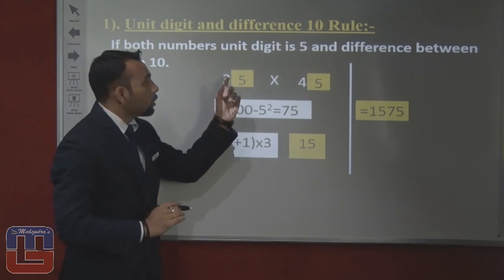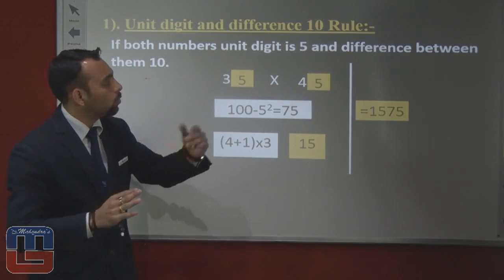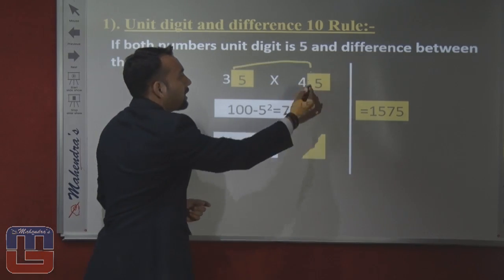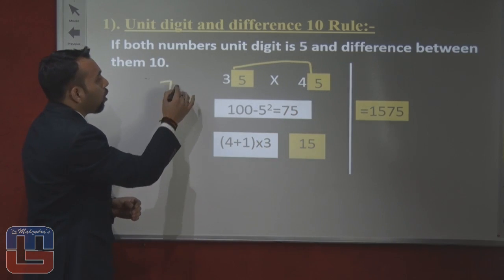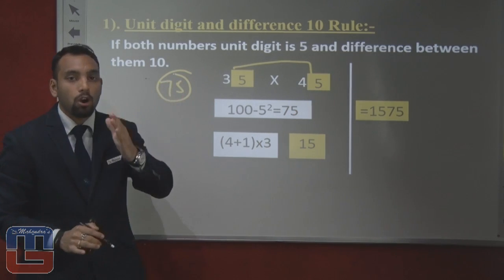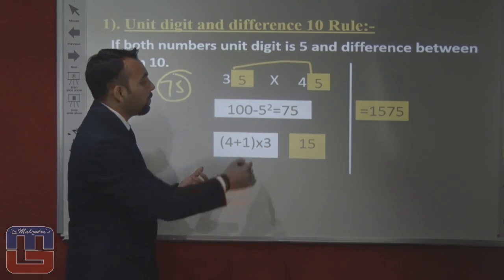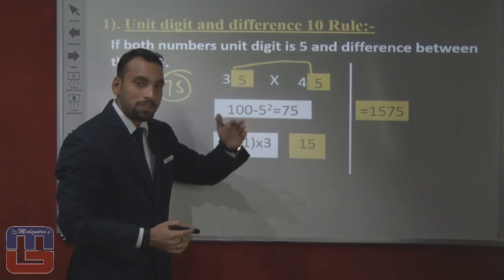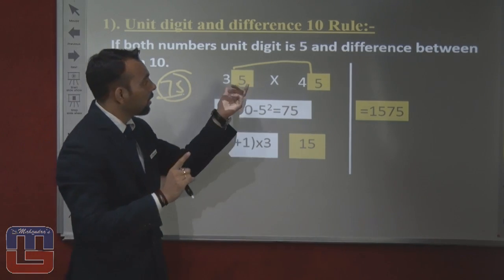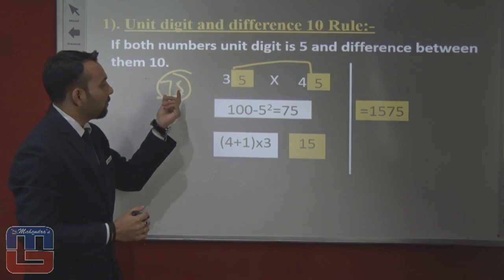So when the unit digit is 5 and the difference between the two numbers is 10, 75 will always come in the answer. We get 75 from 100 minus 5 squared, which equals 75. So for 35 into 45, 75 will always come as the last two digits.